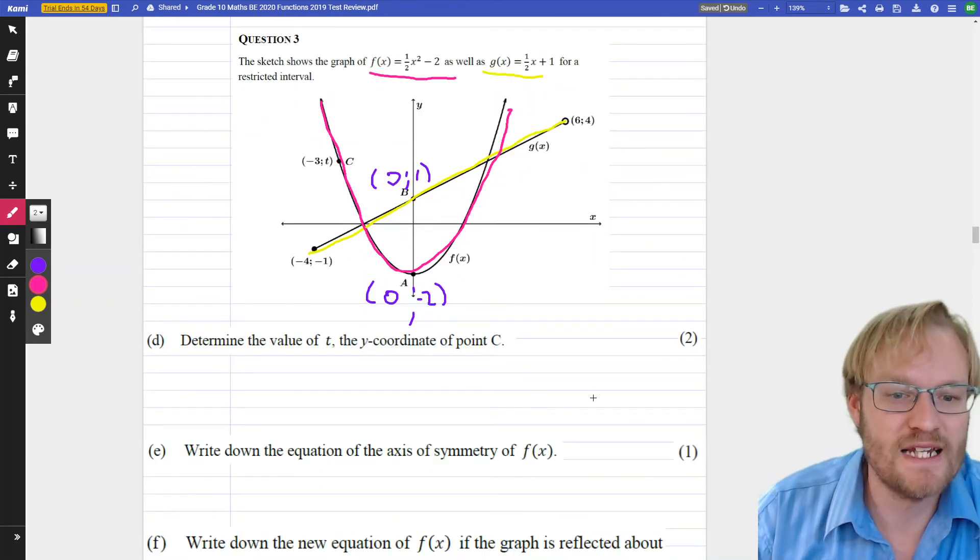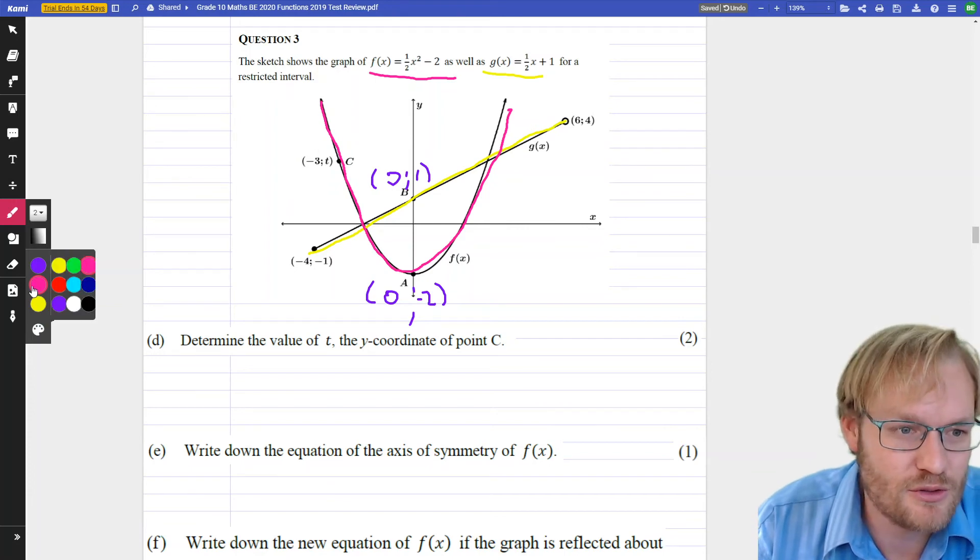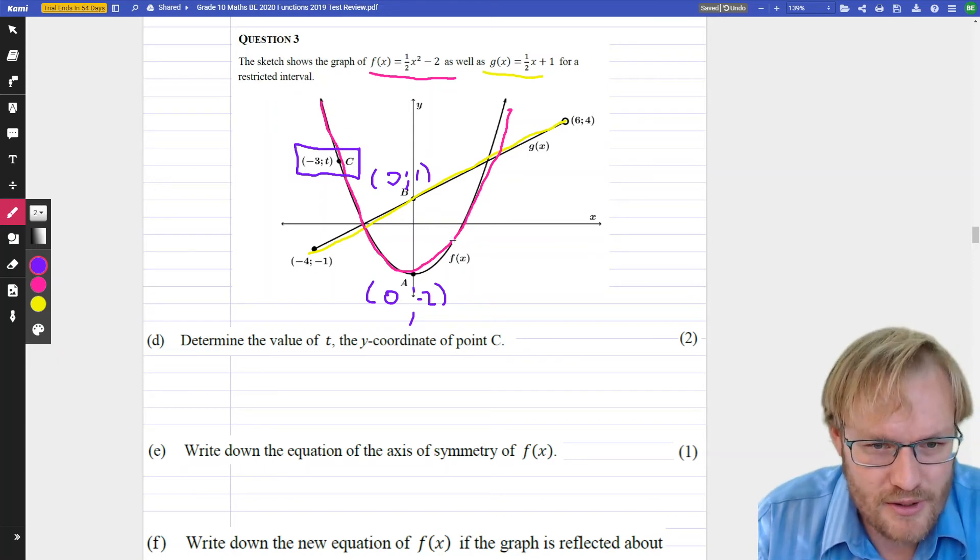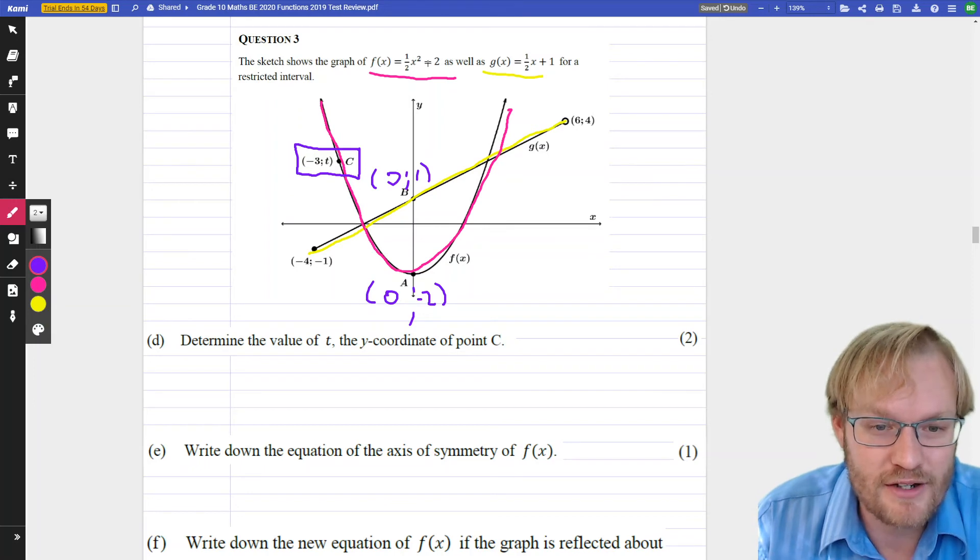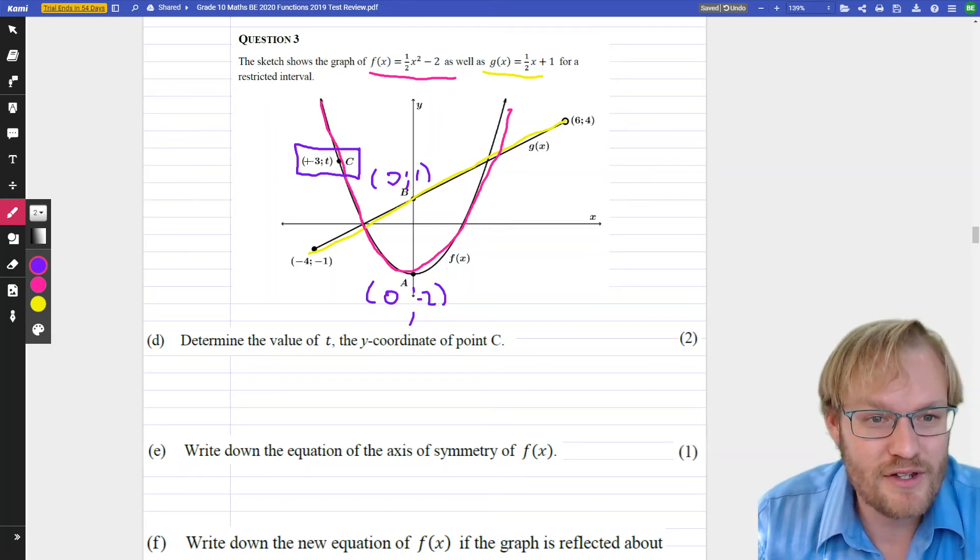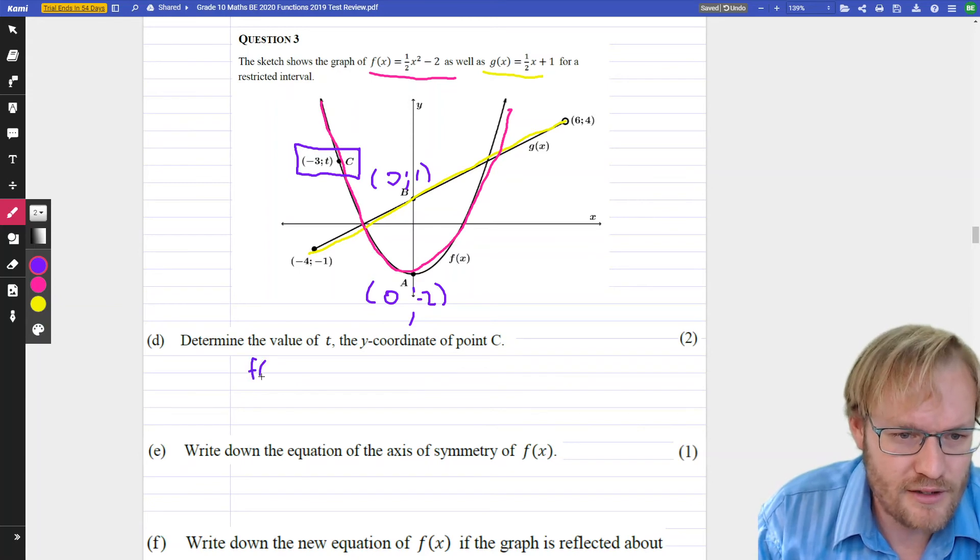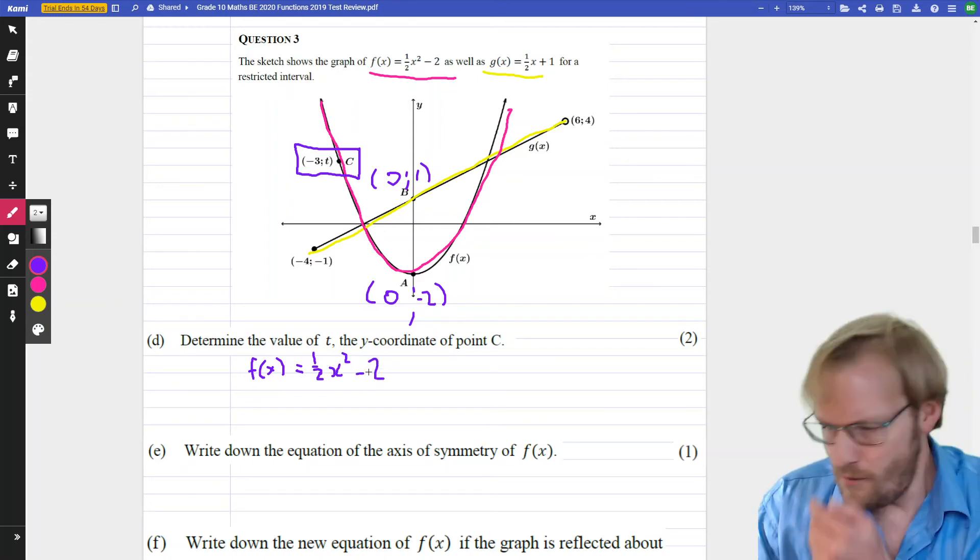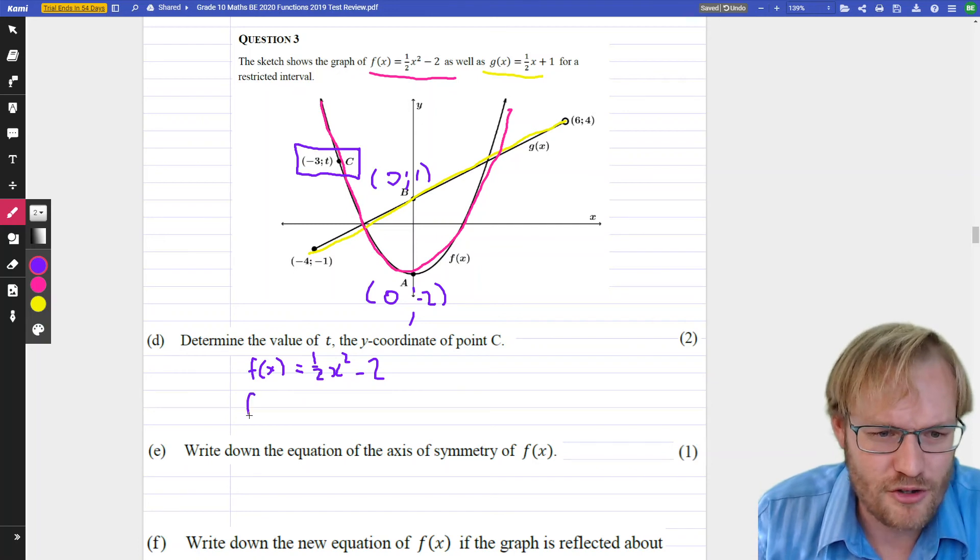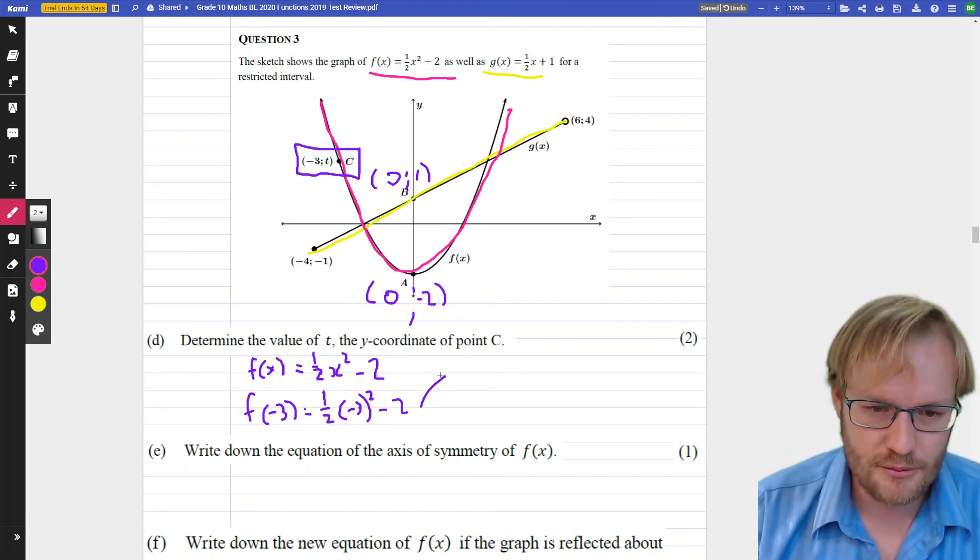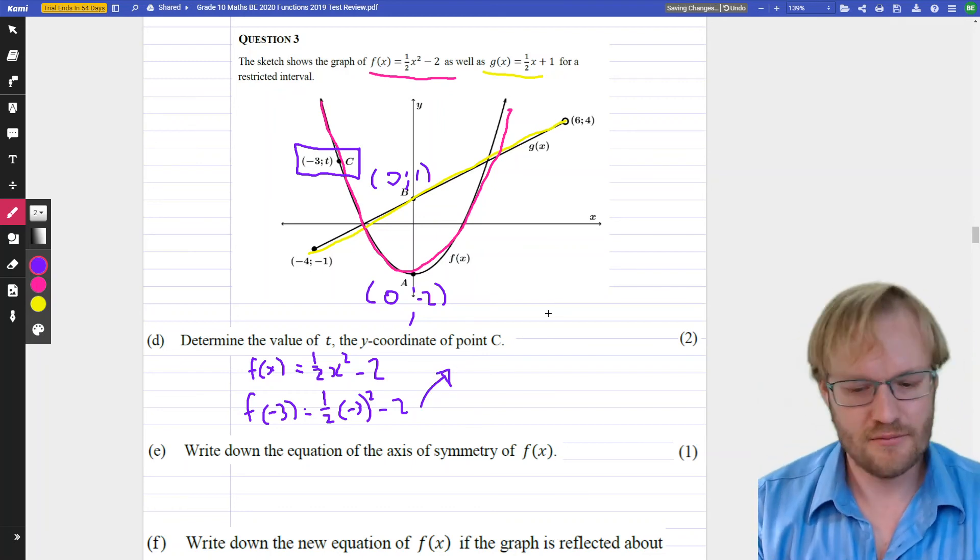Determine the value of t, the y-coordinate of point C. So this is what we're trying to find. We're trying to find that there. It's sitting on our parabola, on the pinky function. There's our pinky function. So it's got something to do with this equation. If we're given the x value, how do we determine the y value? Just substitute in. So f(x) = (1/2)x² - 2. When x is -3, we're going to substitute it in, (-3)² - 2. And I'm going to move up here.